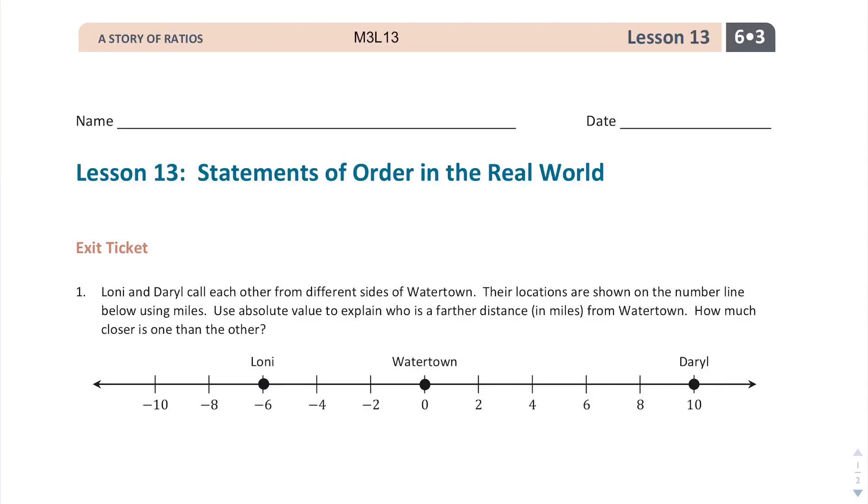In this exit ticket, we will be using absolute value to talk about how far things are apart in relation to a reference point. In this first problem, we have the reference point of Watertown. It is point zero. We have two individuals located in different directions. We're using the unit miles. So Daryl is 10 miles away from Watertown. We can assume that's to the east since it's to the right. And Lonnie is at point negative six. We can call that six miles away from Watertown. We can call that to the west.